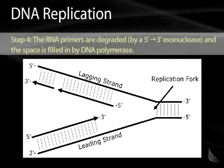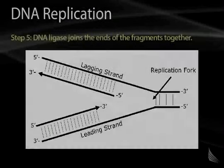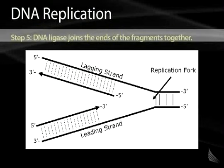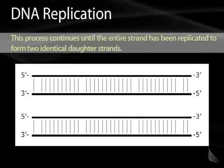The fourth step of DNA replication is the degradation of the RNA primers. In the final product we need all DNA, so the polymerase degrades the RNA primers using a 5' to 3' exonuclease, removing nucleotides from the 5' end sequentially towards the 3' end. The resulting gap from degradation of the RNA primers is then filled in by a DNA polymerase, on both the leading and lagging strands. In the fifth and final step, DNA ligase joins the ends of the fragments together — either Okazaki fragments on the lagging strand, or ends of the leading strand as it reaches another replication fork.